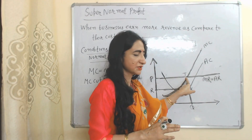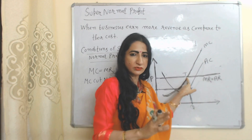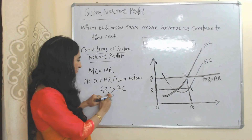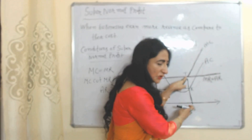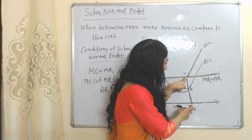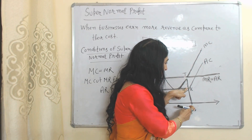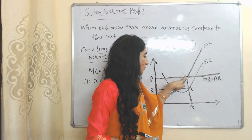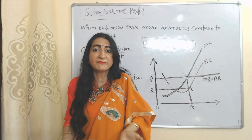Third condition of super normal profit: average revenue is more than average cost. Here you can see our average revenue is TQ — this horizontal line also represents our average revenue. Average cost is KQ. TQ is more than KQ, that means average revenue is more than average cost, so at this T point the third condition of super normal profit is also satisfied.